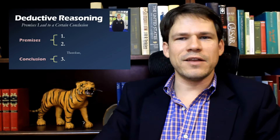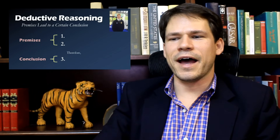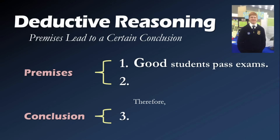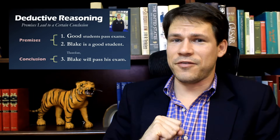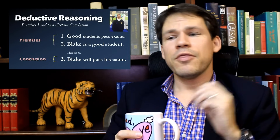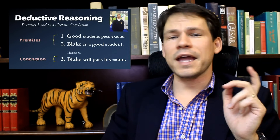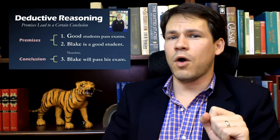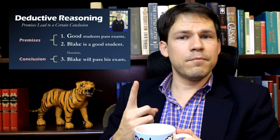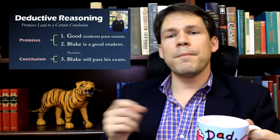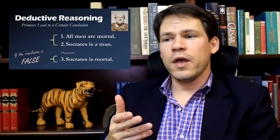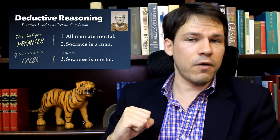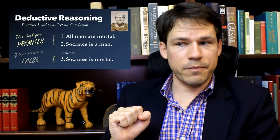Then we bring in our friend Blake, 10th place at the National FFA Convention - we're really proud of that guy. Starting with premises: first, good students pass exams; second, Blake is a good student; therefore, Blake will pass his exam. But if Blake does not pass his exam, then I would need to go back and check my premises - at least one of those premises must be wrong if the conclusion is false. Either Blake is not a good student, or maybe not every good student passes exams. So maybe I came to a false conclusion. The conclusion can stand until you realize it's false, and then you go back to the premises to figure out which one was wrong.